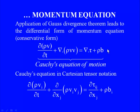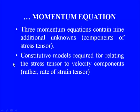Examining the momentum equation, it is a system of three equations with unknowns ρ, velocity vector (3 components), and stress tensor τ (9 components for a second-order tensor) — giving 13 unknowns. With only 4 equations (continuity plus 3 momentum), the system is incomplete. We therefore need constitutive models relating the stress tensor to velocity components, specifically relating stress tensor to strain rate tensor.